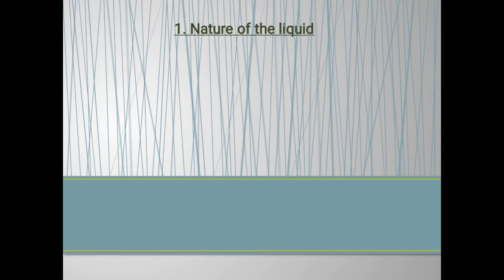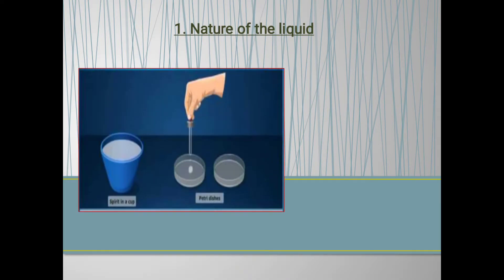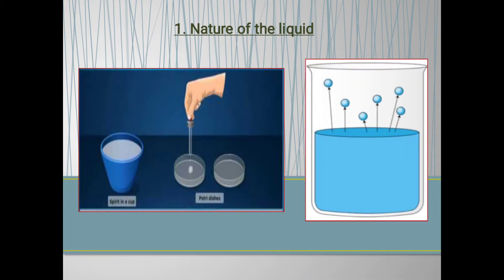The first one is nature of the liquid. As you know, the liquids have different nature from each other. The rate of evaporation depends on the nature of the liquid. Different liquids evaporate at different speeds. For example, some liquids like petrol, spray, and perfumes evaporate more quickly than water because their molecules move much faster at the same temperature.